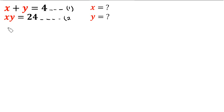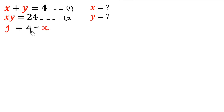We'll call the first equation 'equation 1' and the second 'equation 2.' From equation 1, we can generate another equation by making y the subject of formula. Doing that, y is going to be equal to 4 minus x, and we're going to refer to this as equation 3.